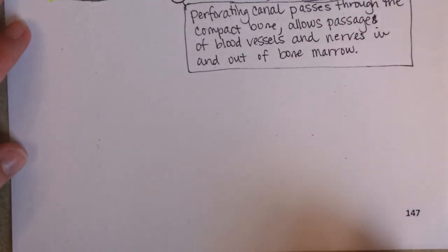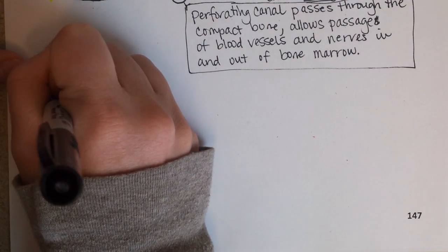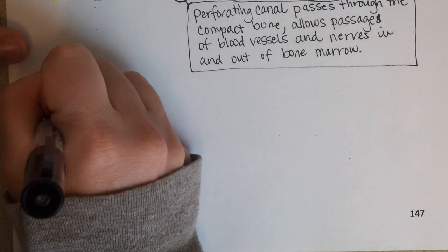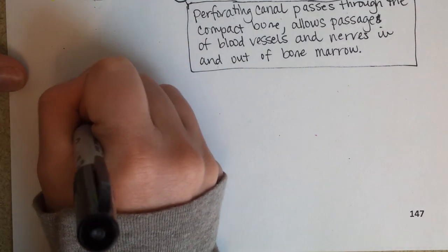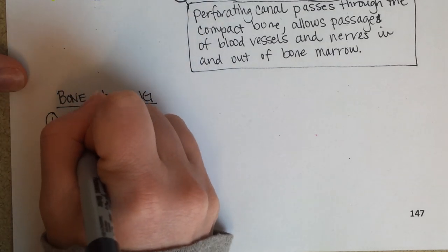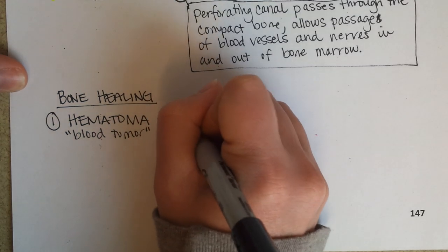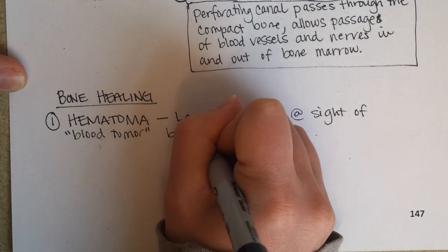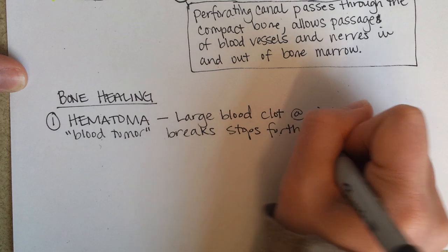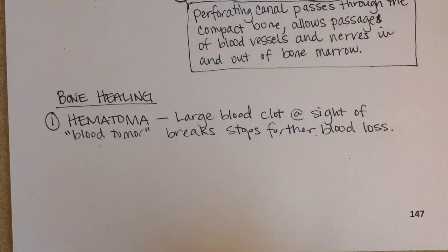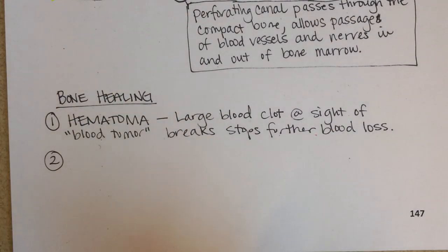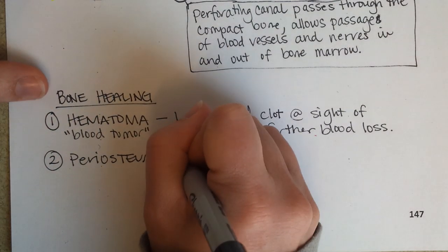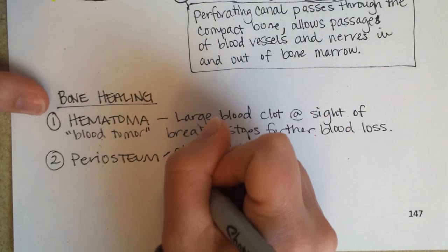Okay, down at the bottom of the page I want to go over a little bit about bone healing and the processes involved. So first, if a bone is broken, a hematoma forms at the site of the break. Hema means blood. Toma means tumor. So it's like a big blood clot. And that's going to stop further blood loss. And then the periosteum is activated.